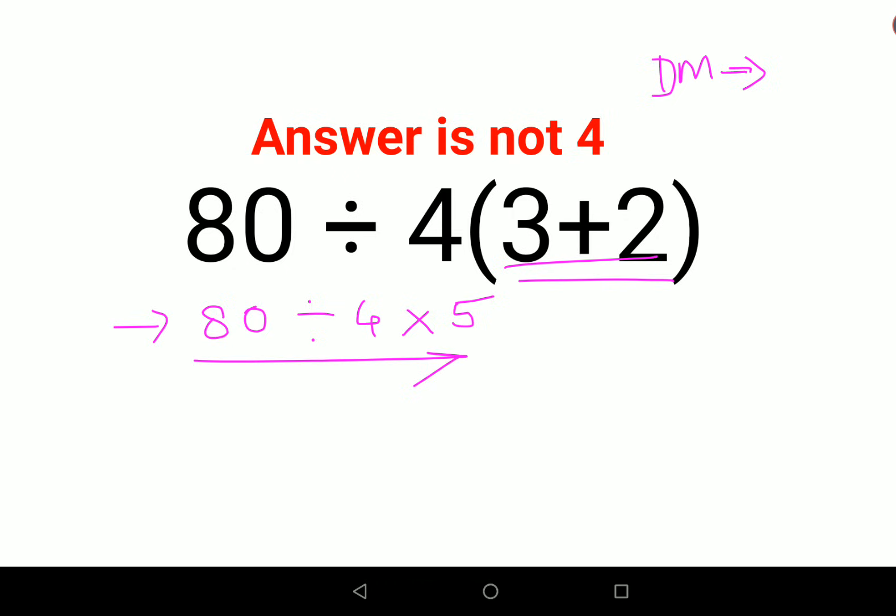So here what you will do is 80 divided by 4, that means upon 4, into 5. So ones are and twenties are, so I am left with 20 into 5. The answer comes out to be 100.